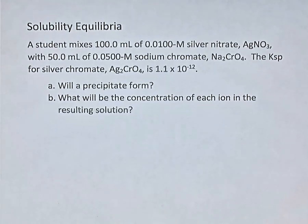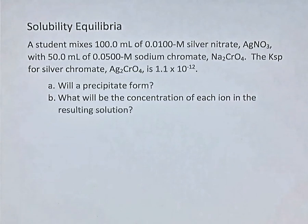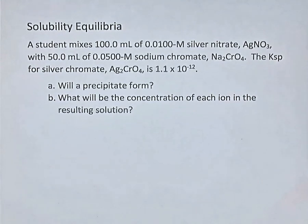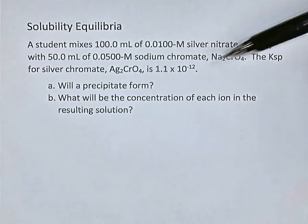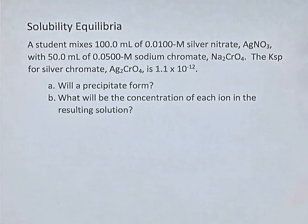In today's video we're looking at another example of solubility equilibrium problem solving. The problem has two parts. The first part is a straightforward typical equilibrium problem found in both regular and AP chemistry classes. But the second part of the question is really only done in the AP class. A student has mixed 100 milliliters of 0.01 molar silver nitrate with 50 milliliters of 0.05 molar sodium chromate. The KSP value for silver chromate is given: 1.1 times 10 to the minus 12.